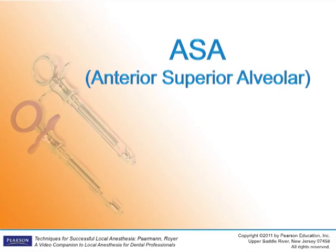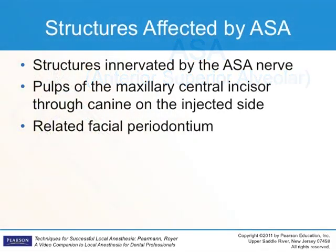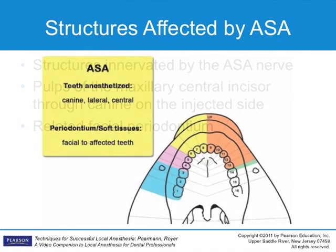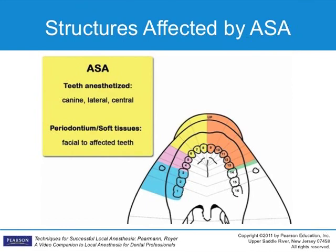The anterior superior alveolar, or ASA injection, is an infiltration type of injection that innervates the pulpal and osseous tissues, periodontal ligaments, facial gingiva, and adjacent vestibular mucosa of the maxillary anteriors — that is the canine, the lateral, and the central incisors. While identical to the infiltration demonstration, the location of the nerves and thus solution placement will anesthetize a broader area, thereby avoiding multiple needle penetrations.